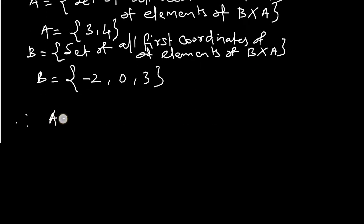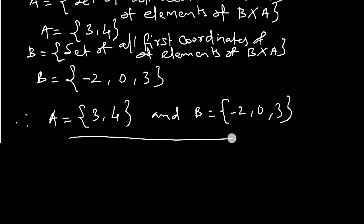Therefore, A = {3, 4} and B = {-2, 0, 3}. That's all.